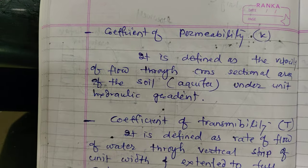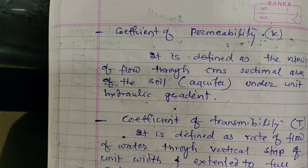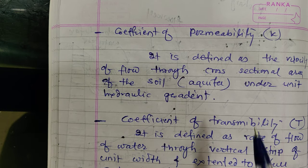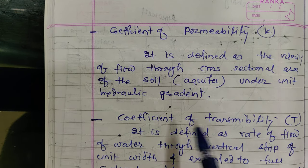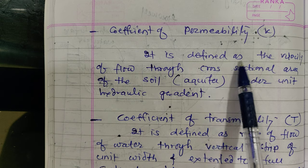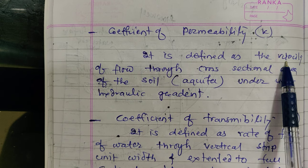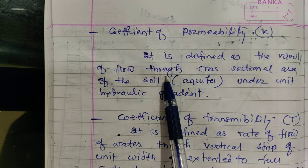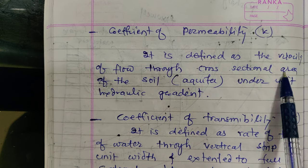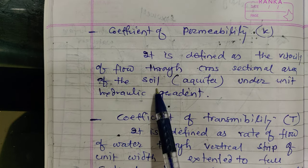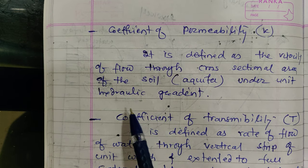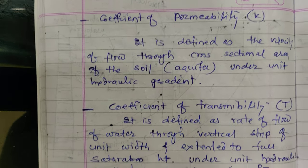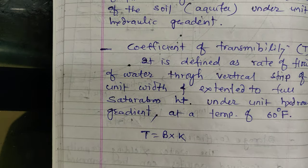Another definition is the coefficient of permeability, denoted by k. It is defined as the velocity of flow through the cross-sectional area of the soil or aquifer under a unit hydraulic gradient.